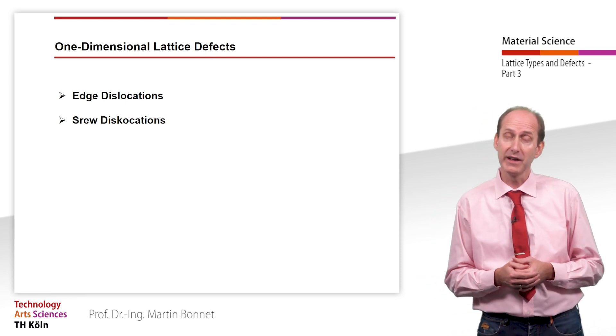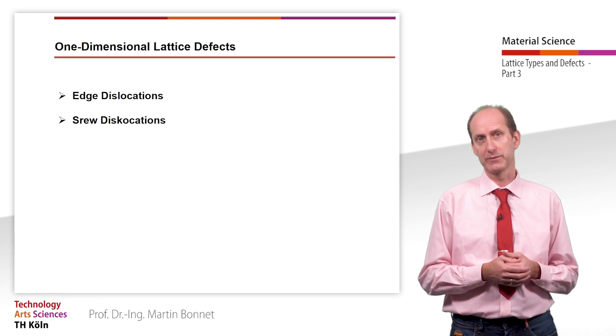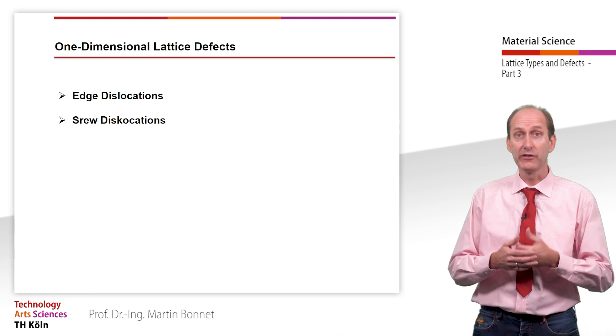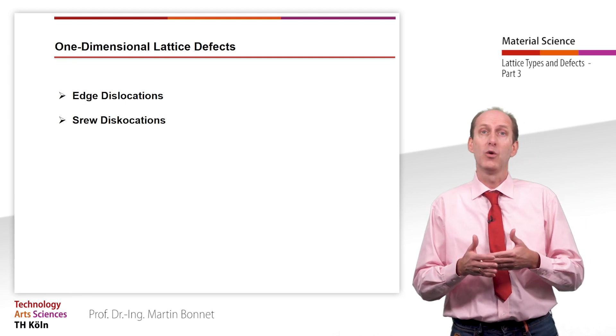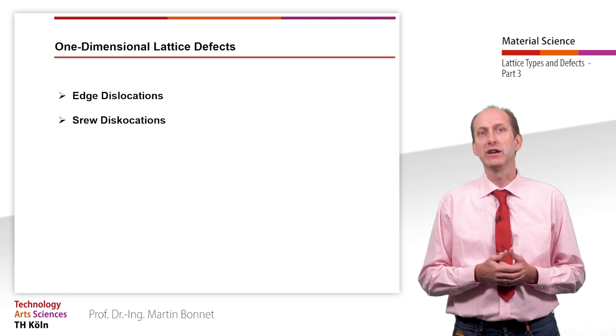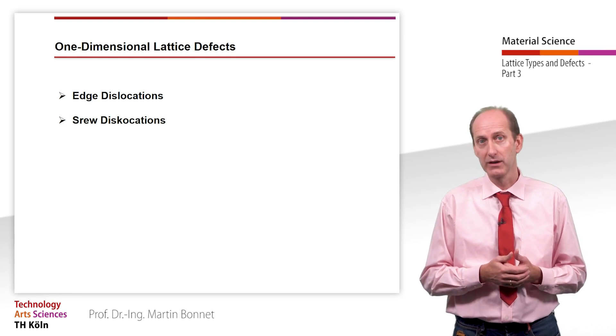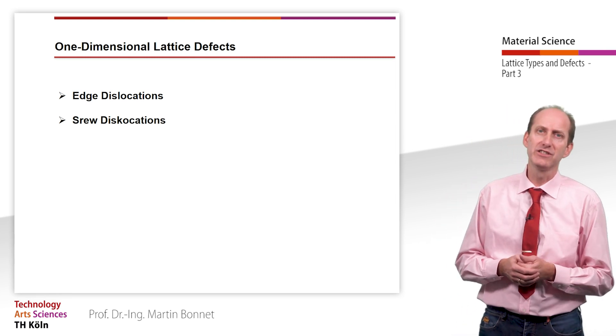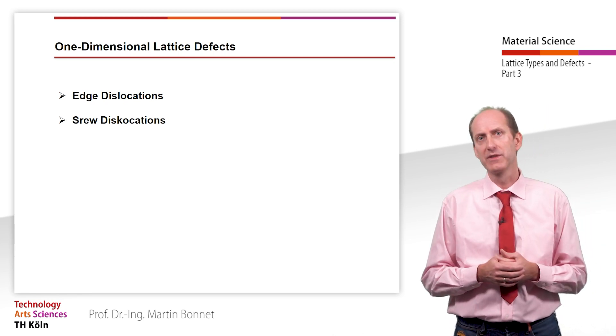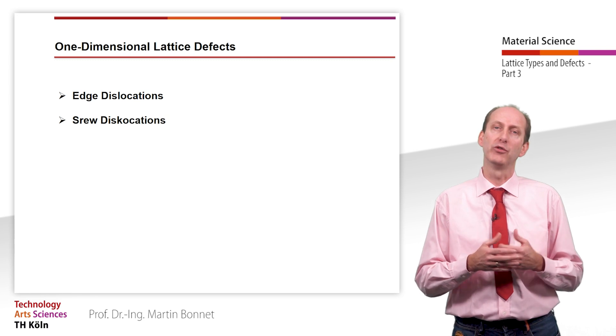Edge dislocations and screw dislocations. You can imagine the edge dislocation as an inserted crystal plane while a screw dislocation merely resembles one rotation in a spiral staircase. Frequently dislocations do not appear as pure edge or screw dislocations but as a combination of both types.